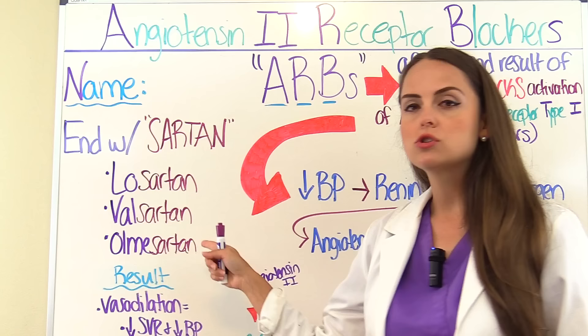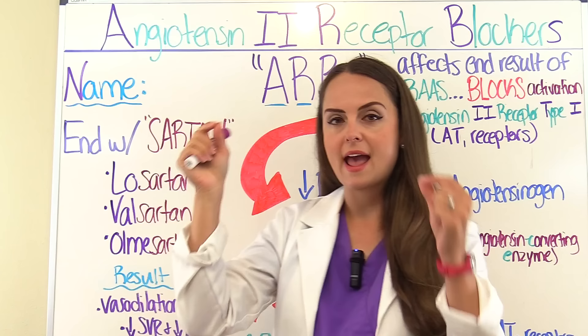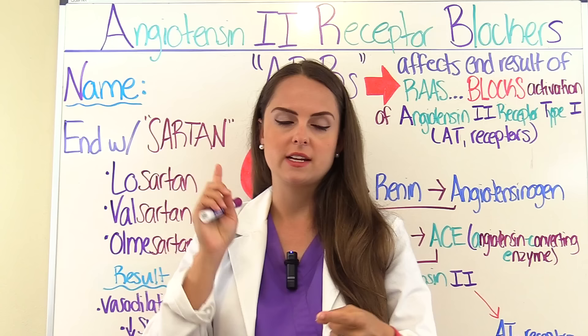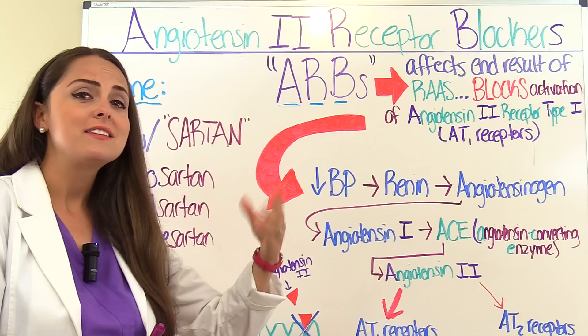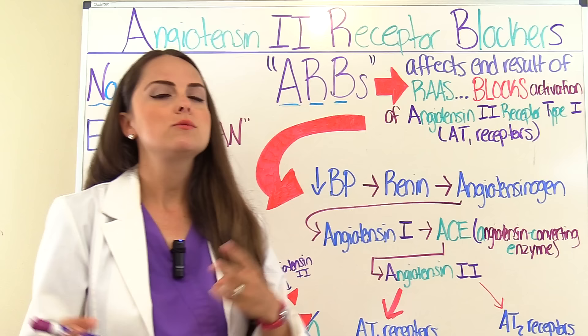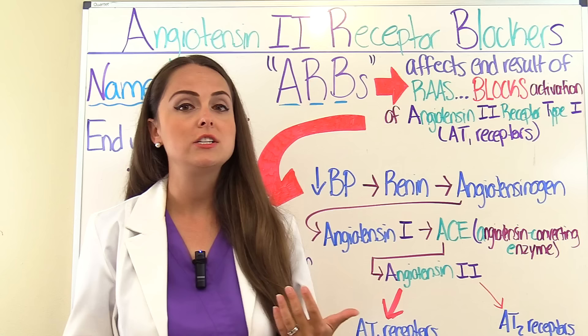Now let's talk about how these ARBs work. Let the family name of any drug you're studying always help you, because it gives you clues about how it works. If you can connect which system it's manipulating, it makes it so much easier to understand side effects and your responsibilities as a nurse. We're talking about angiotensin 2 receptor blockers, so this drug is going to block the receptors that deal with angiotensin 2 — meaning we're dealing with the RAS, the renin angiotensin aldosterone system. This system manages our blood pressure, especially when it drops too low.